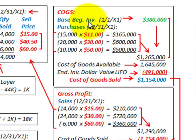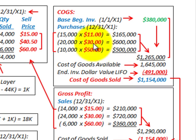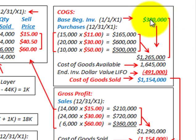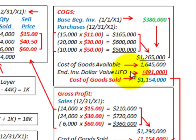Now let's calculate our cost of goods sold. We start with our beginning inventory at 1/1/X1 of $380,000, then add our purchases for the period — quantity purchased times purchase price for each item — totaling $1,265,000. Adding beginning inventory to purchases gives cost of goods available of $1,645,000. Subtracting our ending inventory dollar value LIFO amount of $491,000 gives us cost of goods sold of $1,154,000.